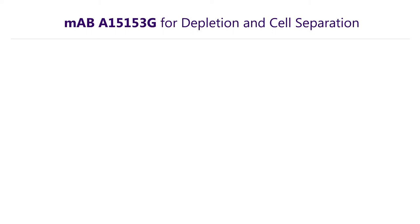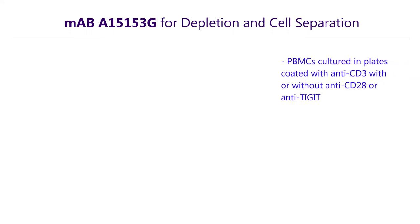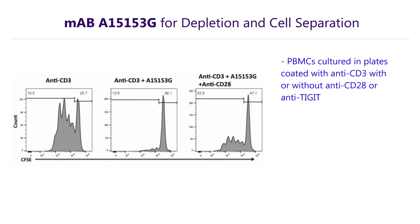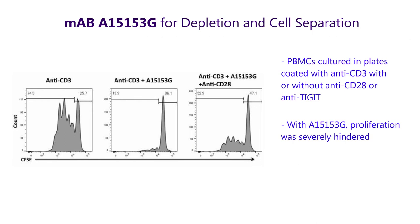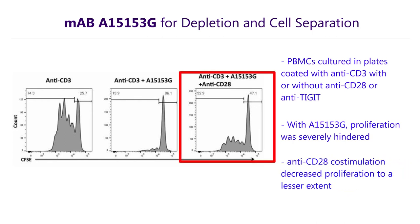To test whether clone A15 can antagonize T-cell proliferation, we cultured human PBMCs with anti-CD3 or anti-CD3 plus anti-CD28 with and without the TIGIT antibody. We then measured cell division and proliferation with CFSE. Upon the addition of clone A15 to the culture, proliferation was severely hindered, as over 80% of the anti-CD3 treated cells failed to undergo a single round of division. With anti-CD28 co-stimulation, proliferation was also diminished.